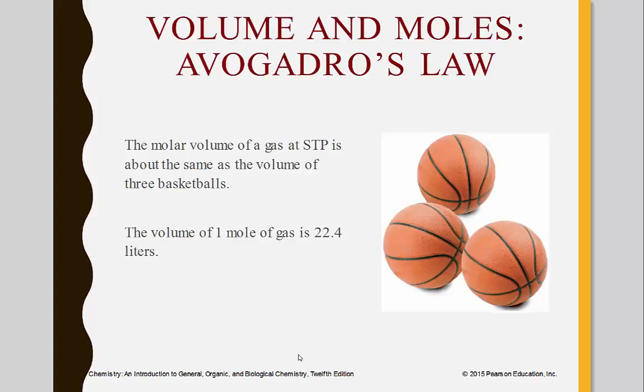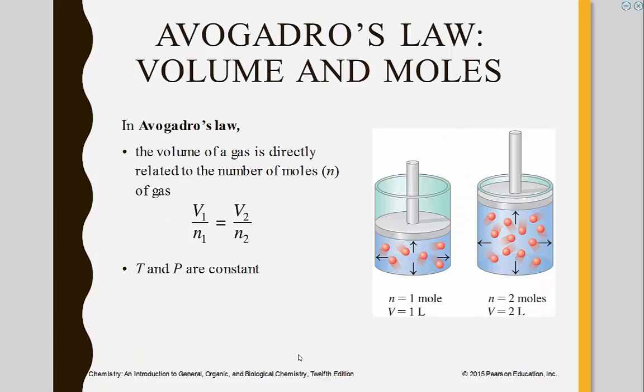This tutorial discusses Avogadro's Law, which is the relationship between volume and moles of a gas. When we look at this relationship, V over N is equal to V over N. What that really means is as the volume goes down, as the number of moles go down, the volume goes down. As the volume goes up, the number of moles goes up.